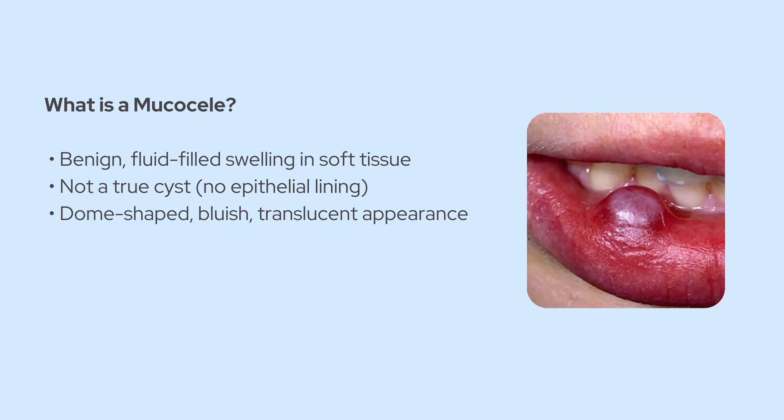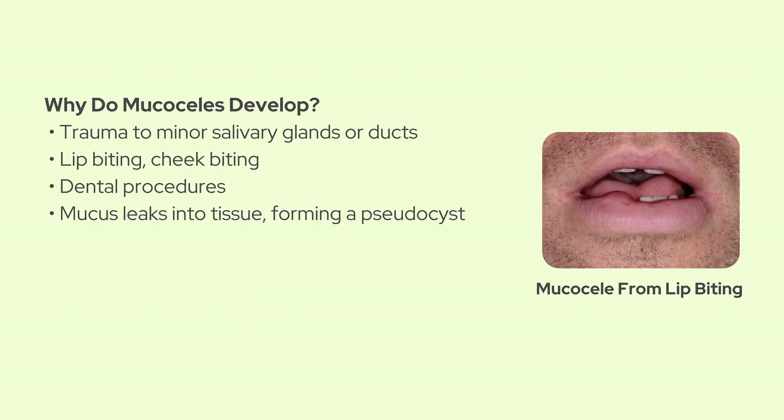Let's get into how these things actually form. Usually mucoceles pop up because of trauma — think habits like lip biting or cheek biting that can damage the minor salivary glands or their ducts. Even things like accidental pinching of the lip or trauma during dental procedures, like a tooth extraction, can block or rupture a salivary duct, leading to mucus escaping into the surrounding tissue. When that happens, the body responds with granulation tissue that walls off the mucus, forming the characteristic swelling we see clinically.